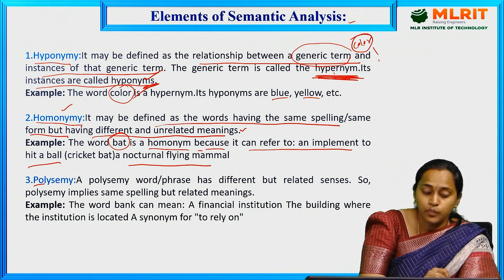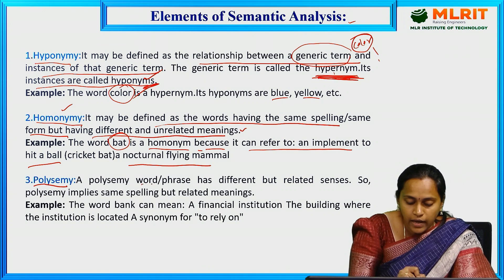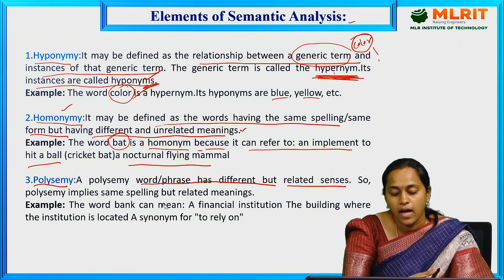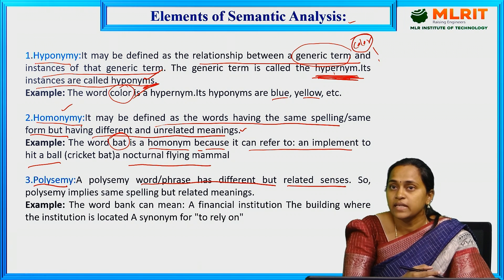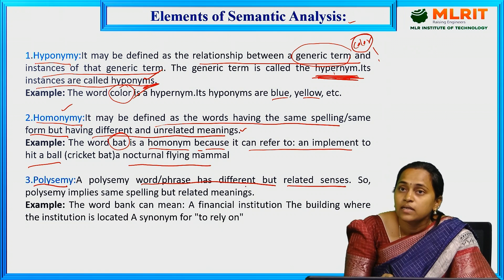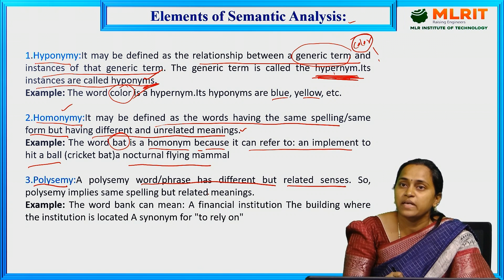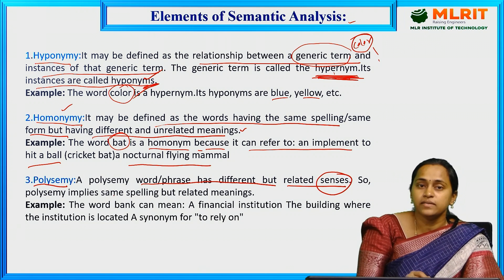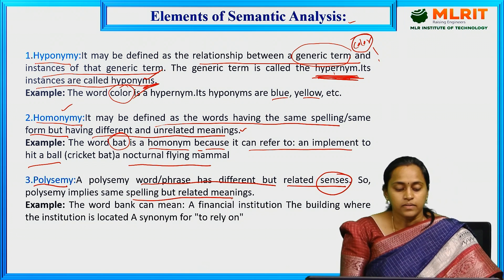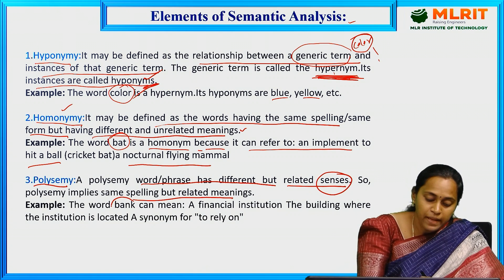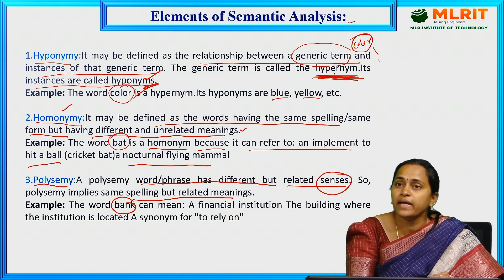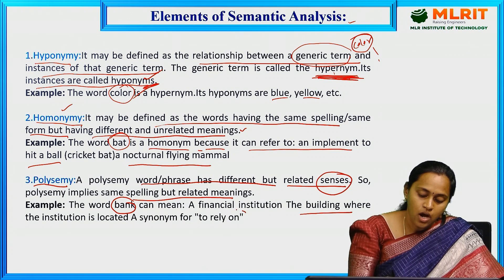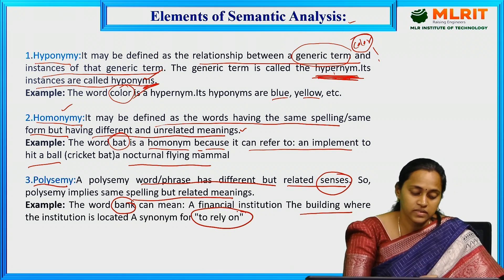Next, polysemy — a word has different but related senses. Polysemy implies the same spelling but related meanings. For example, 'bank' — it can refer to a river bank or a financial institution. The building where the institution is located is a synonym, and 'to bank on' means to rely on. This is the meaning of polysemy.